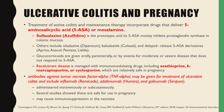Other 5-ASA agents include olsalazine, balsalazide, and the delayed-release 5-ASA derivatives such as Apriso, Asacol, Pentasa, and Lialda. Glucocorticoids are given orally, parenterally, or by enema for moderate or severe disease that does not respond to 5-ASA. Recalcitrant disease is managed by immunomodulating drugs including azathioprine, 6-mercaptopurine, or cyclosporine, which are relatively safe in pregnancy. Antibodies against tumor necrosis factor alpha may be given for treatment of ulcerative colitis and include infliximab, adalimumab, and golimumab. These are administered intravenously or subcutaneously. Several studies showed that these are safe for use in pregnancy; however, these drugs may cause immunosuppression in the neonate.